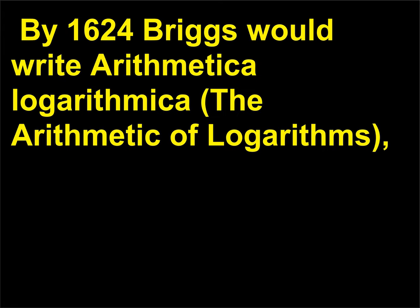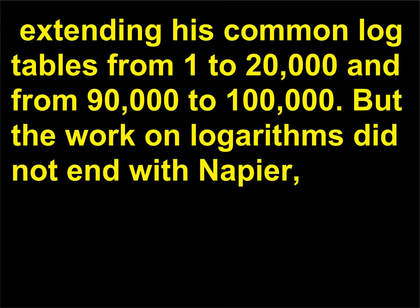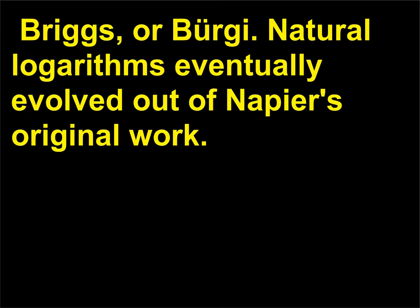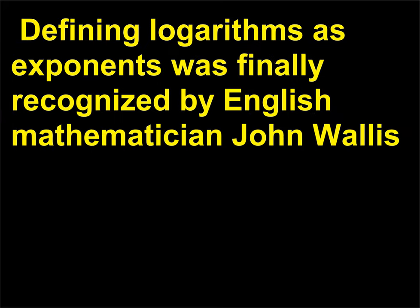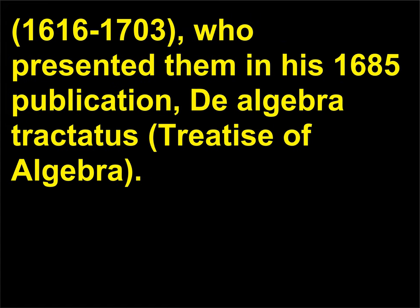By 1624, Briggs wrote Arithmetica Logarithmica — the arithmetic of logarithms — extending his common log tables from 1 to 20,000 and from 90,000 to 100,000. Natural logarithms eventually evolved out of Napier's original work. Defining logarithms as exponents was finally recognized by English mathematician John Wallis (1616–1703), who presented them in his 1685 publication De Algebra Tractatus, Treatise of Algebra.